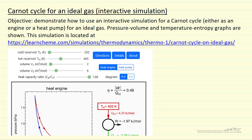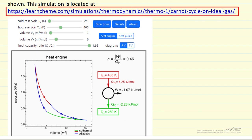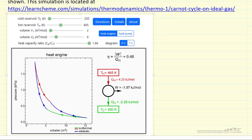I'm going to demonstrate how to use an interactive simulation that models a Carnot cycle for an ideal gas. The simulation is located at this link on the LearnChemE site, and here is a snapshot of the simulation.